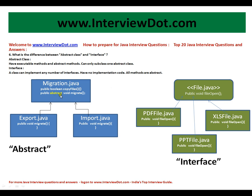Here you can see there are abstract methods and default methods. What is the use of an abstract class? In this example we have migration.java, export.java, and import.java. Export and import are the concrete classes. The copy file method is used by both export.java and import.java, so we don't want to keep this method in both classes — that would be duplicate code.